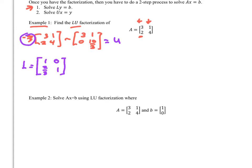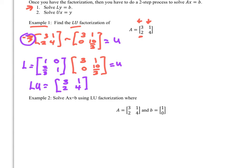Let's verify by multiplying L times U. The slightly complicated part: two-thirds times 1 gives two-thirds, and one times ten-thirds added gives twelve-thirds, which is four. Sure enough, that matches our original matrix A.